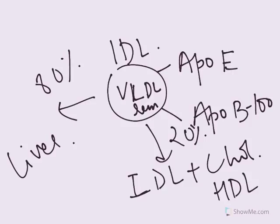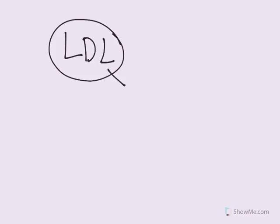And this IDL will get cholesterol from HDL. HDL will give its cholesterol to the IDL with the help of cholesterol ester transfer protein. So cholesterol ester transfer protein will help give the cholesterol from the HDL to the IDL. Once IDL gets that cholesterol, it becomes LDL. Yes, that's what LDL is. So now this LDL is there in the blood and it has on it ApoB100. That's it. LDL just has ApoB100 on it.